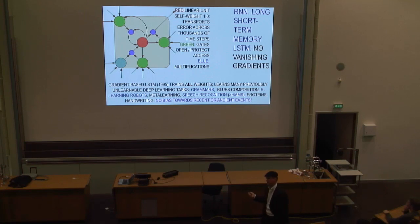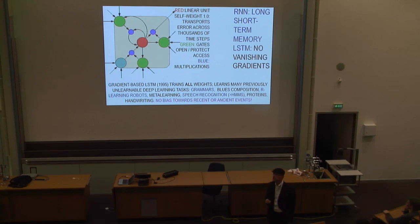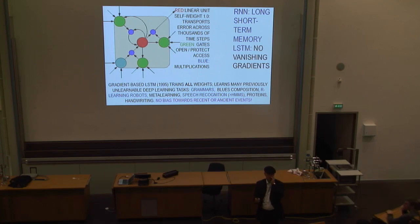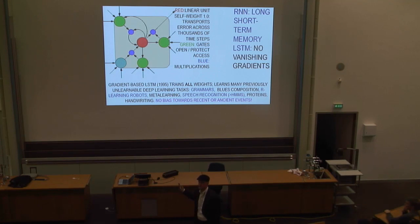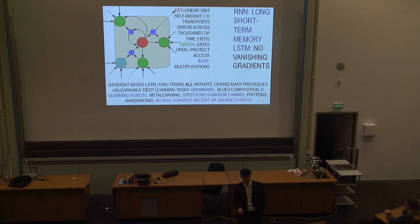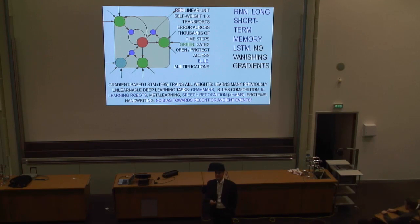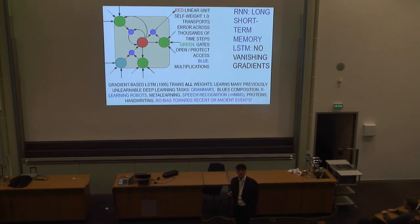Our competitors back then were sequence learners such as hidden Markov models, which were state-of-the-art in speech processing. Hidden Markov models cannot learn context-free or context-sensitive languages by definition, whereas these recurrent networks can — so they are more powerful. But back then, computers were so slow that we only had small toy experiments to show that these things could learn tasks other models could not. But computers kept getting faster and faster.